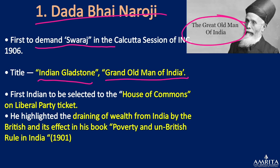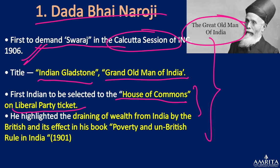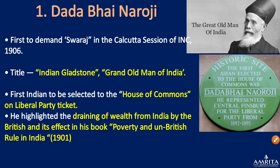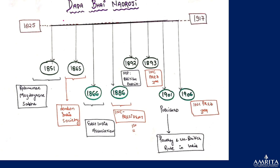Dadabhai Naoroji was the first to officially demand Swaraj, which came at the Calcutta session when he presided over the Indian National Congress. He was the first Indian to be elected to the House of Commons on a Liberal Party ticket — he was an MP in the British Parliament. He highlighted the drain of wealth from India by the British in his book 'Poverty and Un-British Rule in India' in 1901.